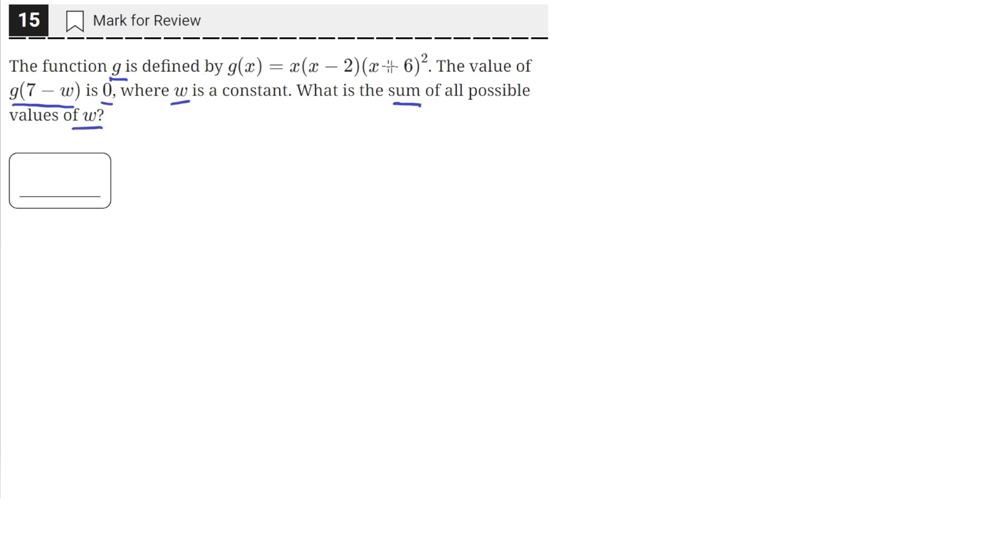Okay, so we're given this function g of x equals x times the quantity x minus 2 times the quantity x plus 6, all squared. And we're told that the value of g of 7 minus w is equal to 0. So this inside here is the value of x. So we would just plug in the quantity 7 minus w into x.